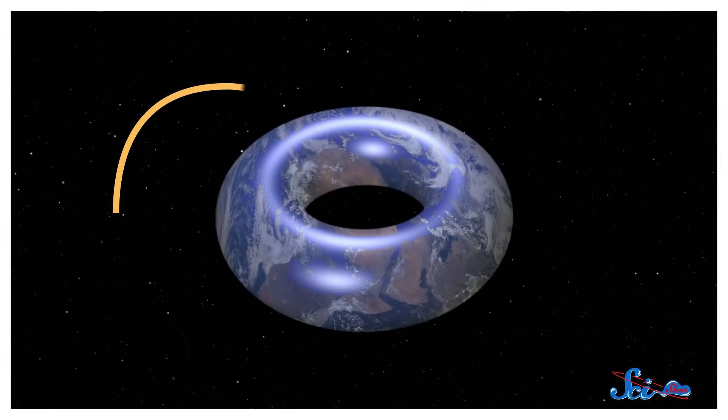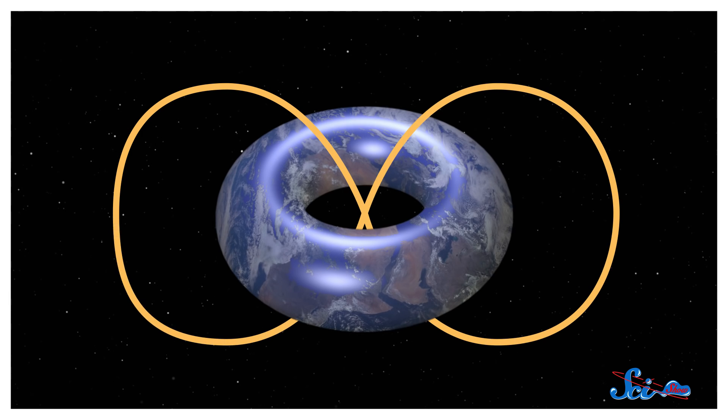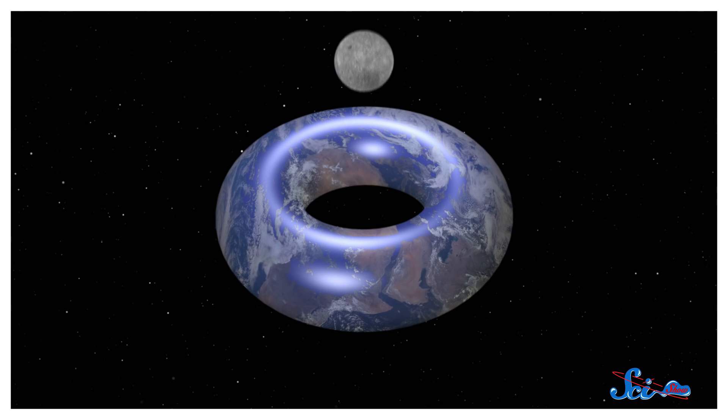One possibility is that its moons could have a figure-eight-shaped orbit, where the moon would loop around one side of the toroid, through the hole in the middle, around the other side, and back through again. But it could also just move up and down, exactly in the middle of the hole in the ring, like some kind of perfectly balanced ping-pong ball, which would be pretty cool to see.